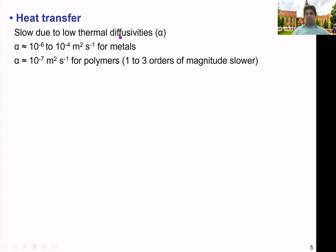Most polymers are poor thermal conductors with very low thermal conductivity and thermal diffusivity. Compared to metals, whose thermal diffusivity is in the range of 10⁻⁶ to 10⁻⁴ m²/s, most polymers have values around 10⁻⁷ m²/s. Thermal diffusivity indicates how quickly heat can travel through a material, so the low values for polymers mean they are quite difficult to heat and cool.